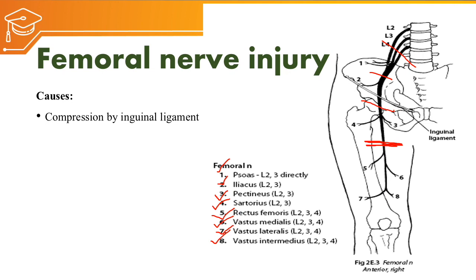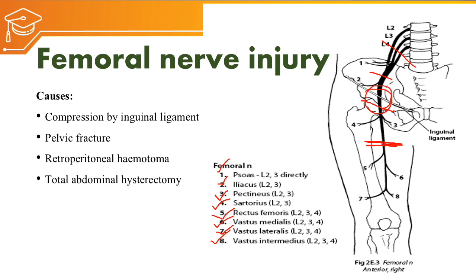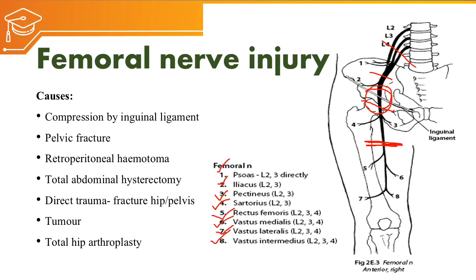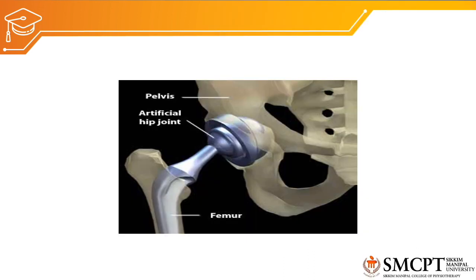What are the causes for femoral nerve injury? Compression by the inguinal ligament may cause entrapment of the femoral nerve. Pelvic fracture can compress the femoral nerve — this will be a higher nerve injury, so more muscles may be involved. Retroperitoneal hematoma, total abdominal hysterectomy, direct trauma or fracture of the hip and pelvis, tumour presence at the pelvic area, and total hip arthroplasty — which is the replacement of the joint by an artificial joint surface — are all common causes of femoral nerve injury.